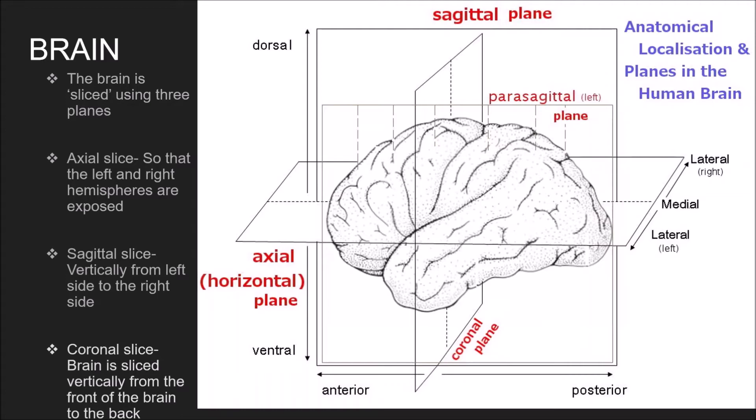The middle part of the brain is referred to as the medial section and the left and right outside edges are called lateral. These terms are used to denote where a region in the brain is located, and once you are familiar with these terms you will be able to identify the relative locations of brain areas. For instance, the ventromedial prefrontal cortex, or the temporal lobe, is posterior to the frontal lobe.